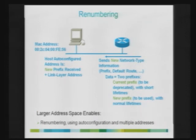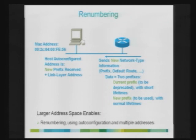If you want to renumber a link, you can advertise multiple prefixes — each with a preferred lifetime and valid lifetime. To deprecate an existing prefix, send a new router advertisement with the old prefix having a preferred lifetime of zero and a limited valid lifetime that will expire. Nodes will pick up the new prefix, which has higher preferred and valid lifetime values.